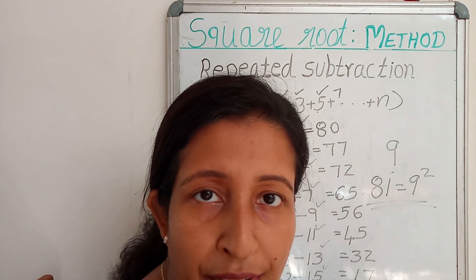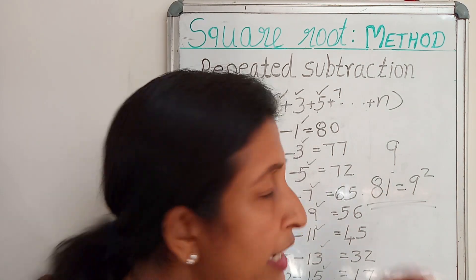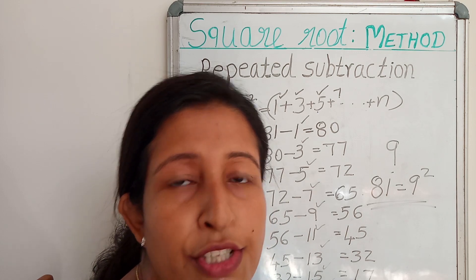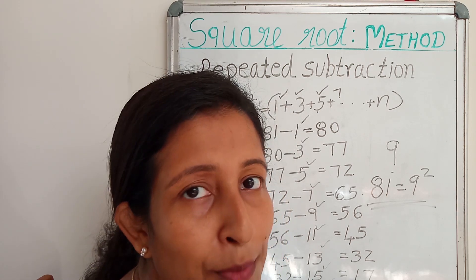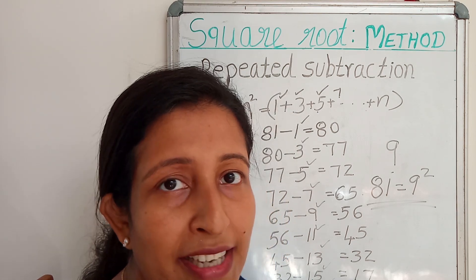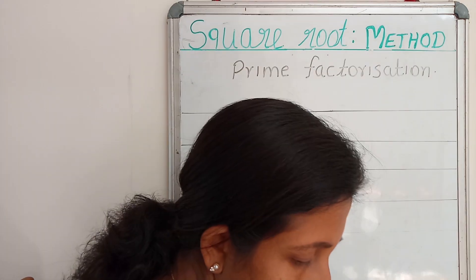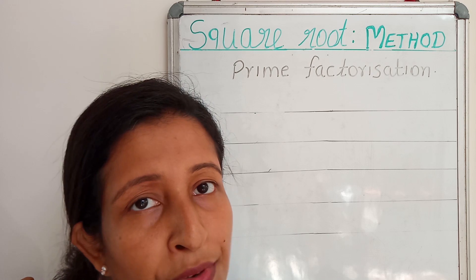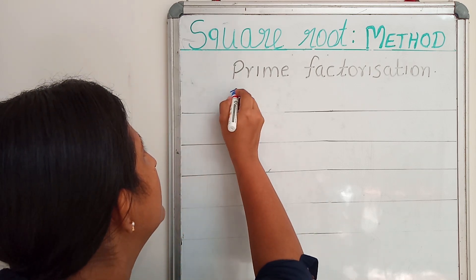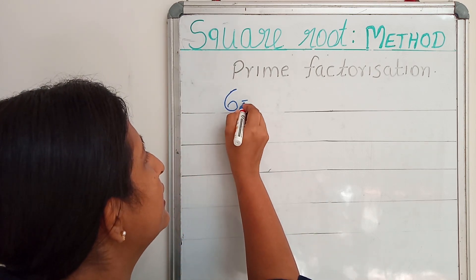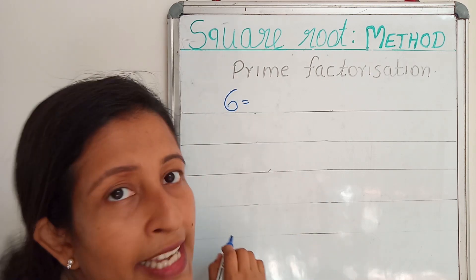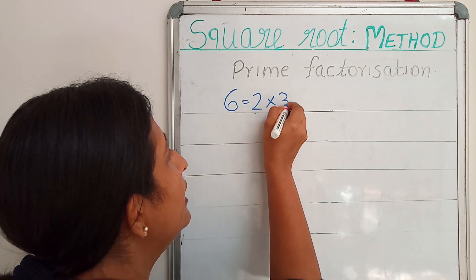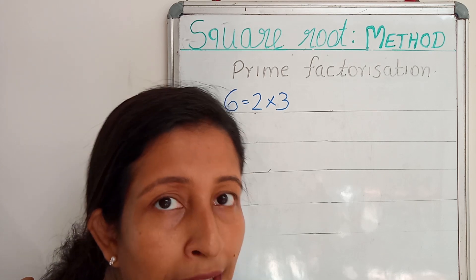This method is a little bit difficult if you are dealing with 3-digit or 4-digit numbers. So we are going to study one more method — that is the prime factorization method. My question is: how do you find the prime factors of 6? You have studied it earlier — 6 can be written as 2 × 3, and 2 and 3 are prime factors.